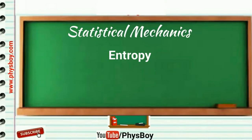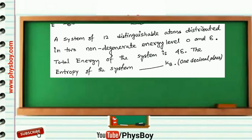The question was: A system of 12 distinguishable atoms distributed in two non-degenerate energy levels, 0 and epsilon. Total energy of this system is 4 epsilon. The entropy of the system is dash times kB. You have to calculate a numerical answer up to one decimal place.